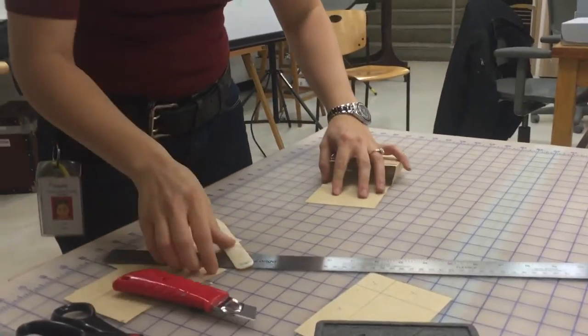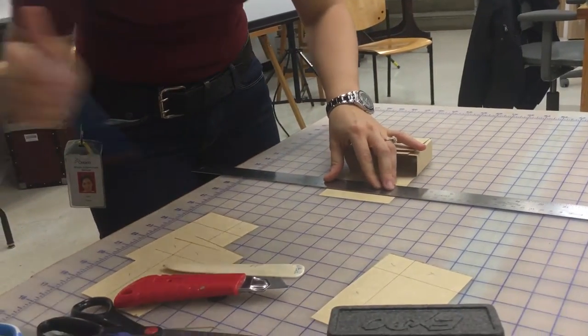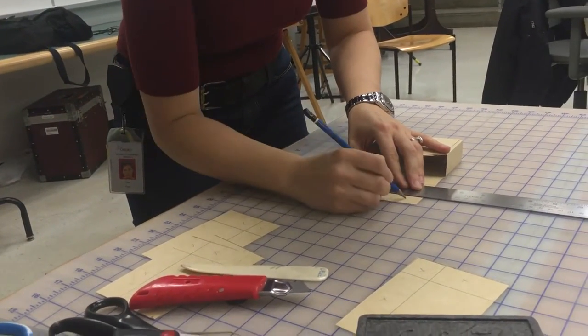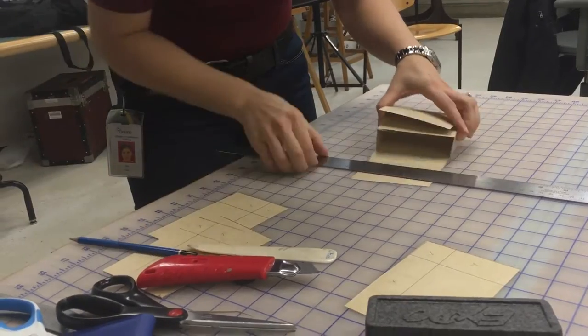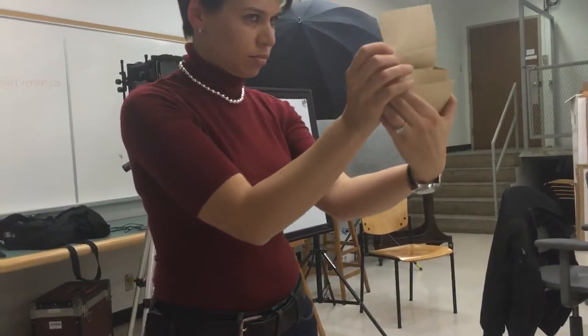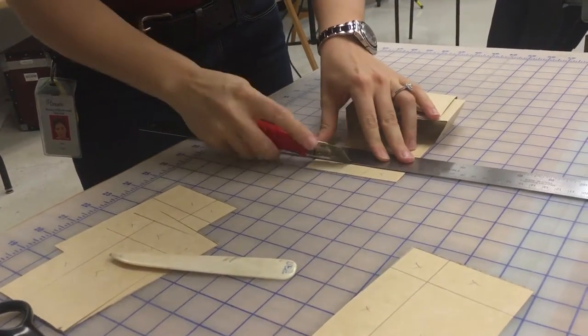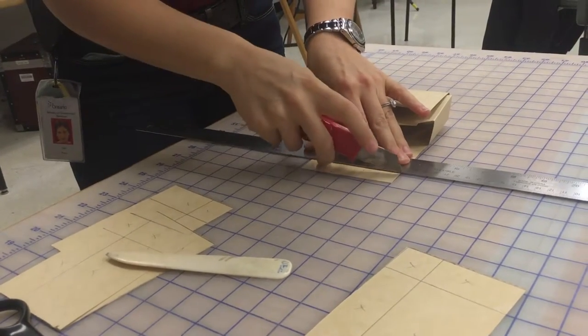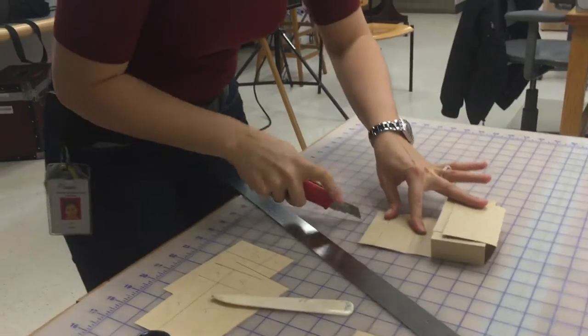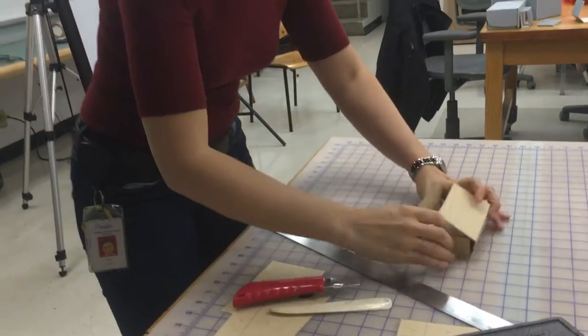So, just like before, I'm going to draw a tab about a third of the way down. Okay? And I will trim. Because they're just little cuts, you don't need the ruler here. You can. Again, it depends how precise you want to be.